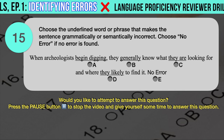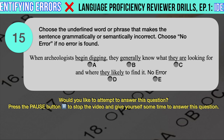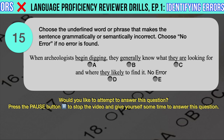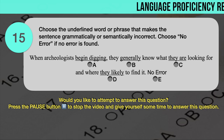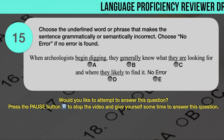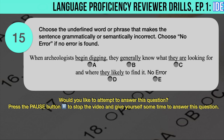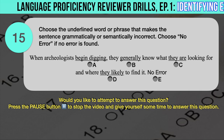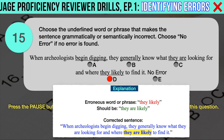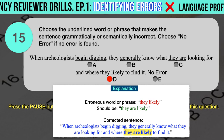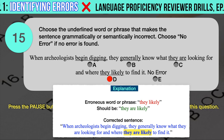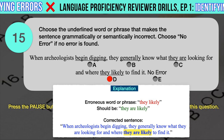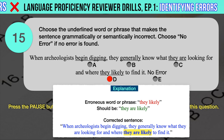Drill question number 15. 'When archaeologists begin digging, they generally know what they are looking for and where they likely to find it.' The underlined words are: A. Begin digging, B. Generally, C. They are, D. They likely. The correct answer is D. 'They likely' should have been 'they are likely.' The dependent clause 'where they likely to find it' requires a verb to match with the pronoun 'they.' Correct sentence: When archaeologists begin digging, they generally know what they are looking for and where they are likely to find it.